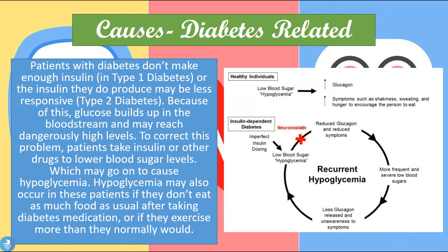As we mentioned earlier, the majority of cases are actually diabetes related. Patients with diabetes don't make enough insulin in type 1 diabetes, or the insulin they do produce may be less responsive in type 2 diabetes. Because of this, glucose builds up in the bloodstream and may reach dangerously high levels. To correct this, patients usually take insulin or other drugs to lower their blood sugar levels, and this may go on to cause hyperglycemia.